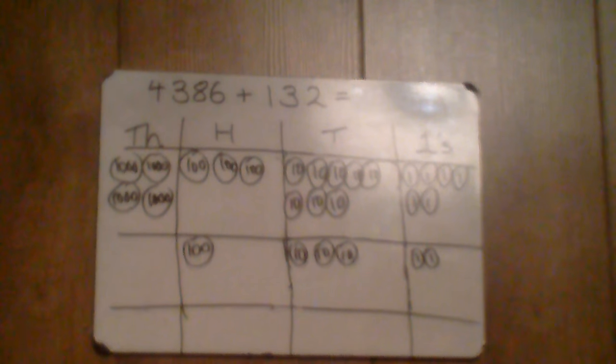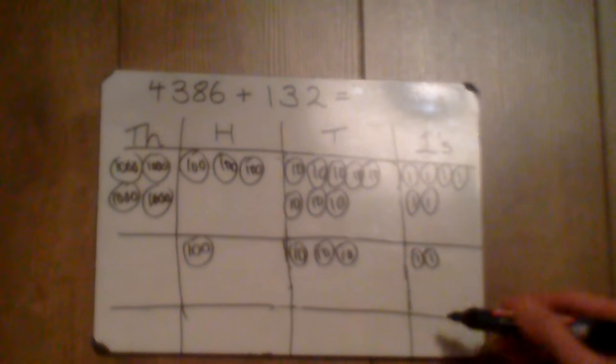So now I've drawn it out, I can start to add up each of the columns to find out my answer. So I have 1, 2, 3, 4, 5, 6, 7, 8 ones.